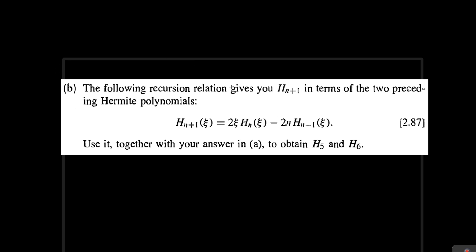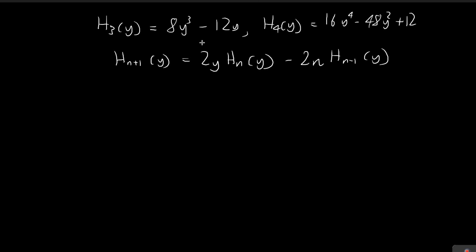Moving on to part b, this question is rather simple. All we have to do is implement this recursion formula to derive h5 and h6. In the previous problem, we've already found h3 and h4, so we're going to use this recursion formula and the results from part a to find h5 and h6.